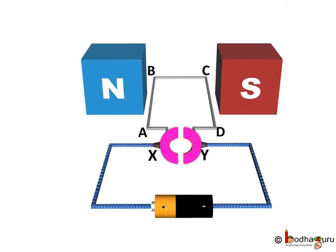Also, the two ends of the coil are connected to the two halves, say P and Q, of a split ring. The inner sides of these halves are insulated and attached to an axle such that the half rings can rotate freely around the axle.